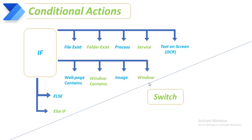If you see on my screen, Power Automate Desktop provides two types of conditional actions. One is 'if' and another one is 'switch'.